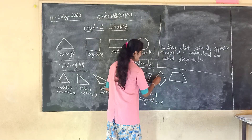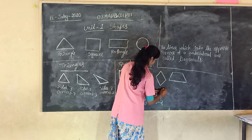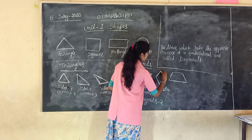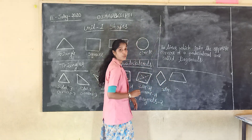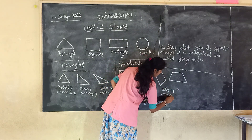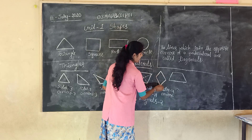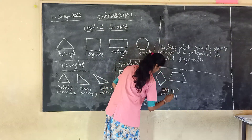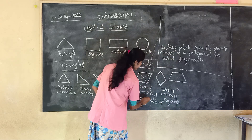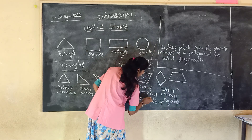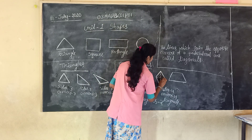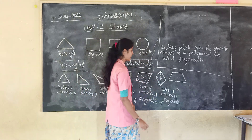Next, here is another quadrilateral. Sides — one, two, three, four. Total: four sides. And corners — one, two, three, four corners. And diagonals — one, two. It has two diagonals.